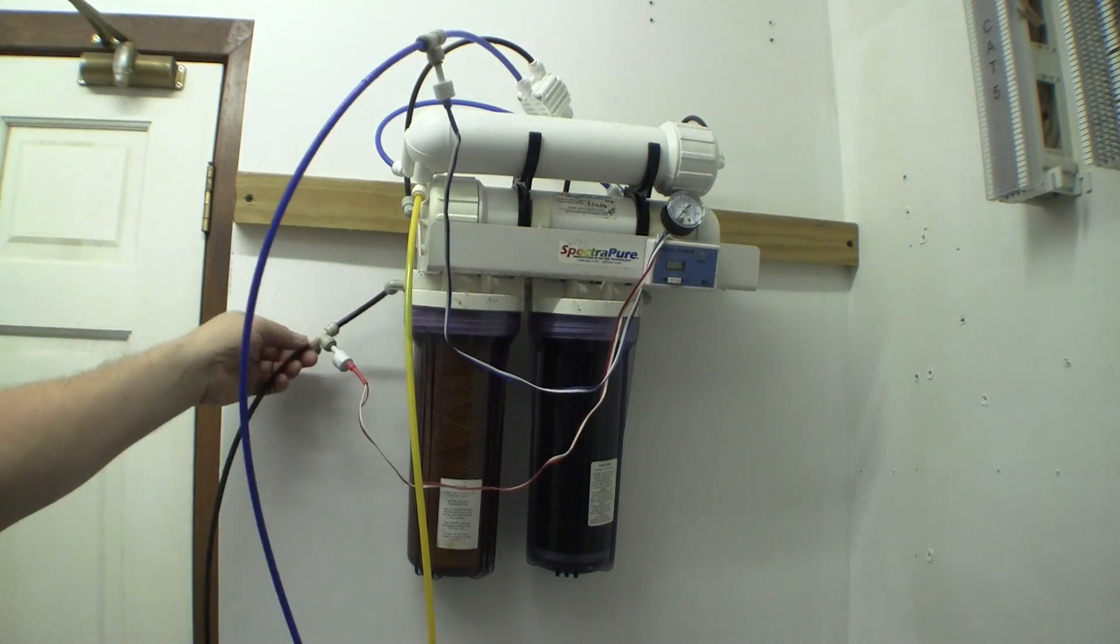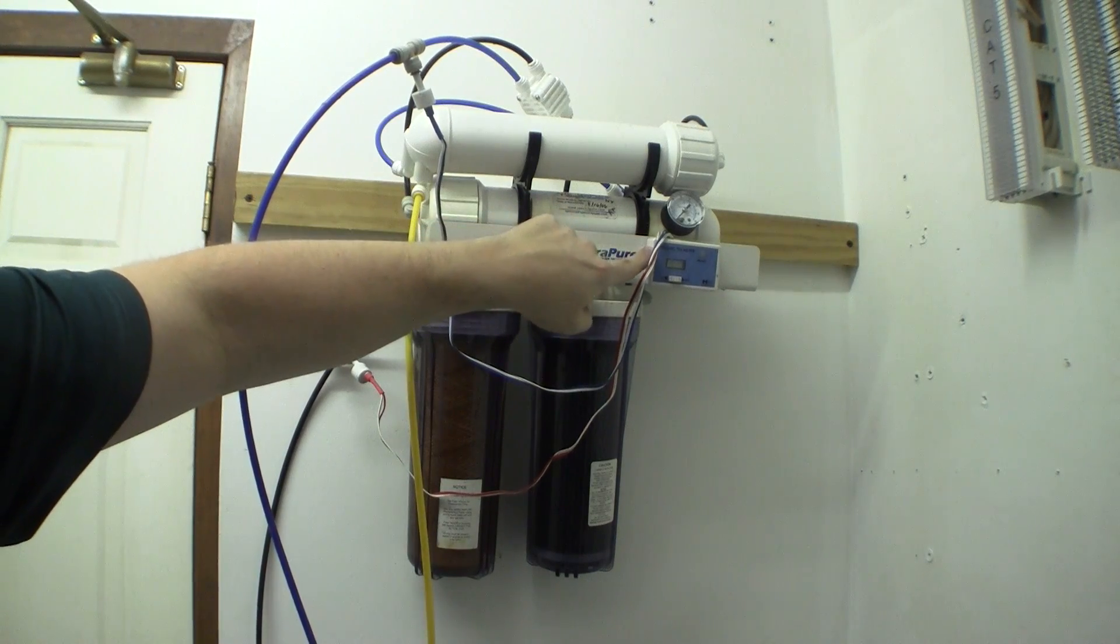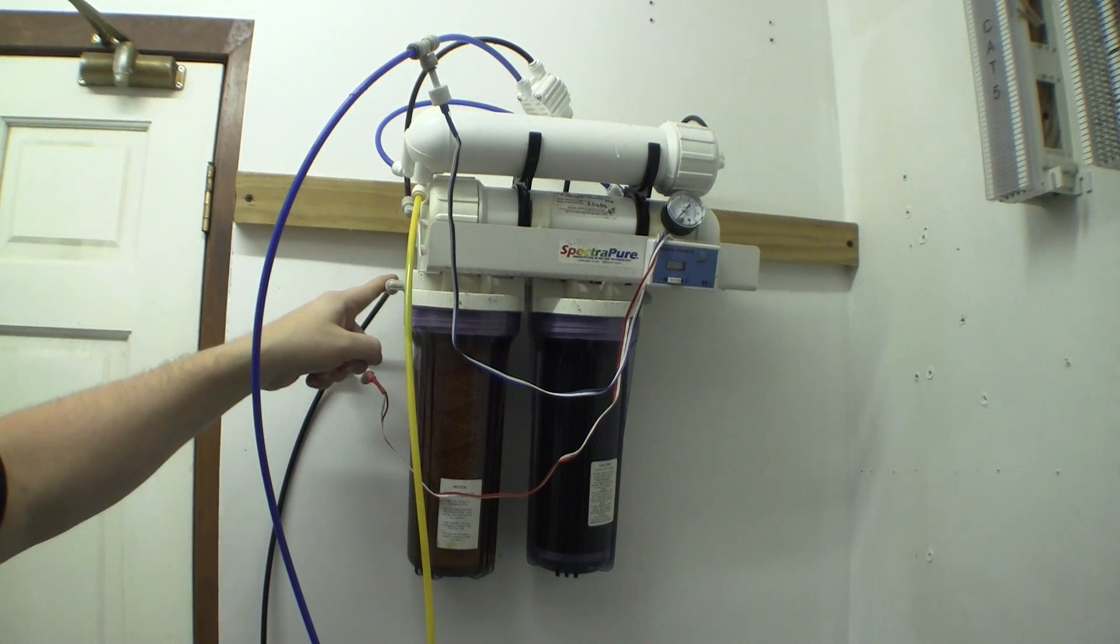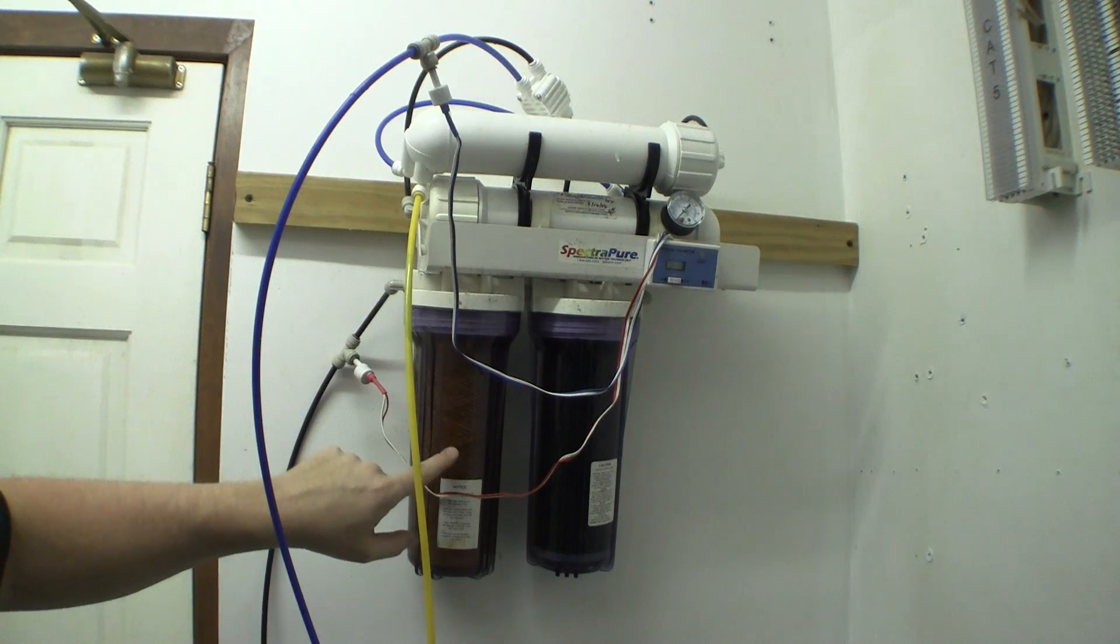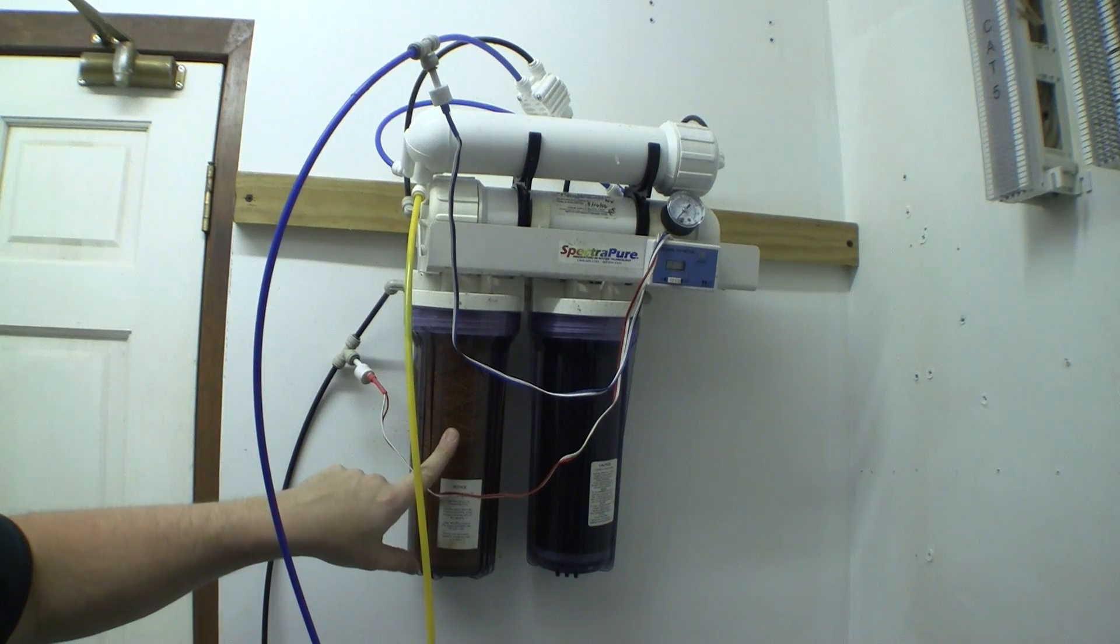And the first thing it hits is a meter probe. This meter is connected to this TDS meter and it will tell me what the TDS of the water going into the unit is. Then the water passes through a sediment pre-filter which removes any kind of particulate matter.